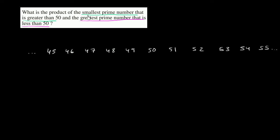Now we want to take the product of the smallest prime number that is greater than 50. So let's start at 50 and let's go greater than that and think about which of these are prime. Now 51 is always a little tricky one. It feels prime, but it's good to know that that's 17 times 3.